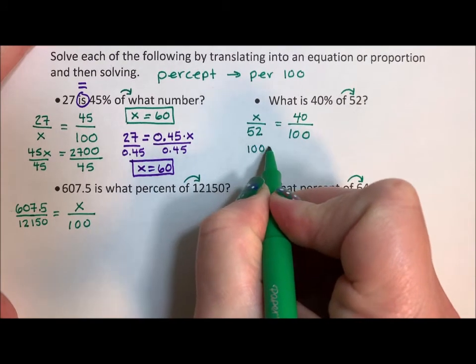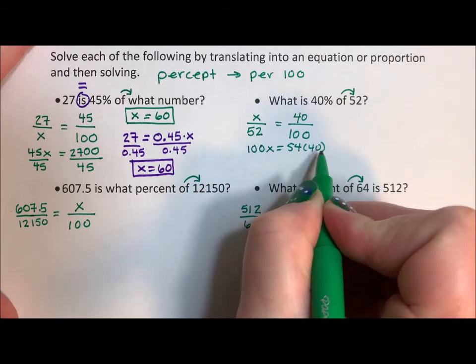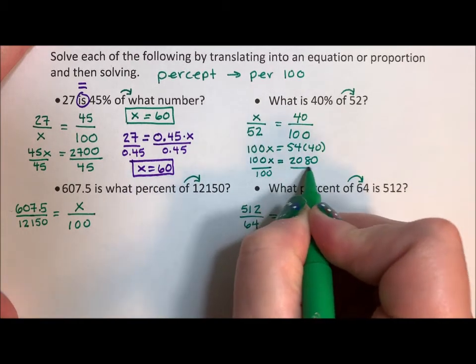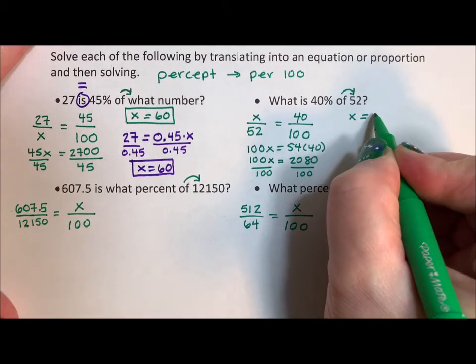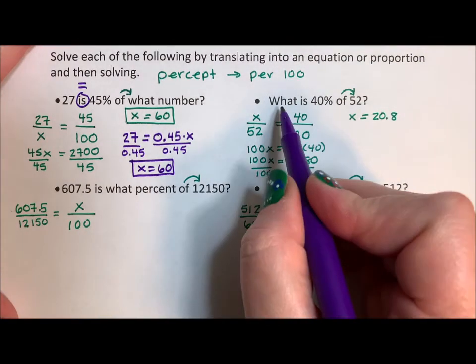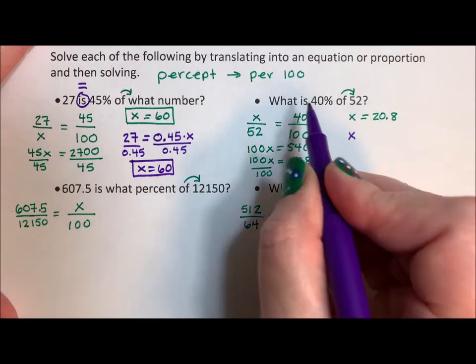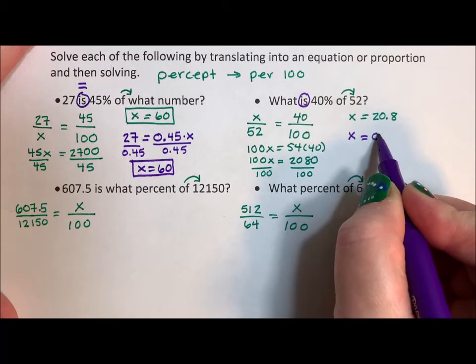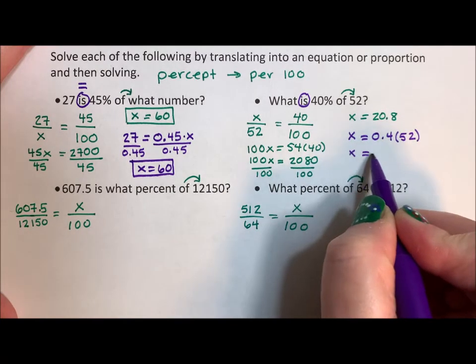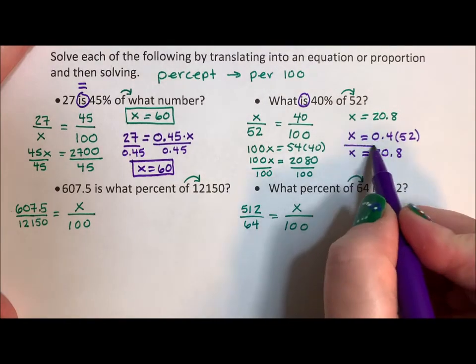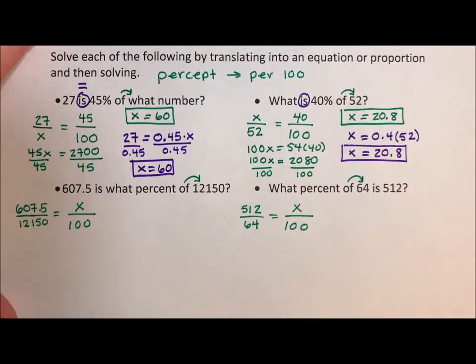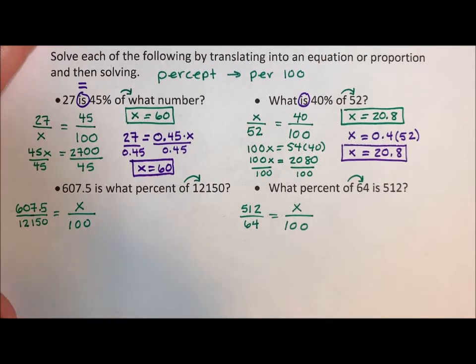Cross multiplication. 100X equals 52 times 40. 100X equals 2080. Divide by 100. X equals 20.8. If I translate this, what? That's my unknown, X. Here's my equal sign again. What is 40%, so 0.4 of is 0.4 times 52. Well, 0.4 times 52 is 20.8. Again, regardless of how I solve this equation or proportion, I got the same answer, which is important. Math, it shouldn't matter the path you take. Your solution should always be the same.